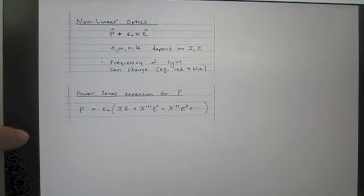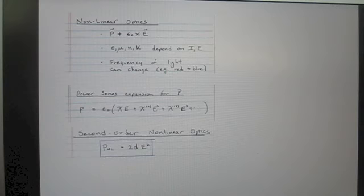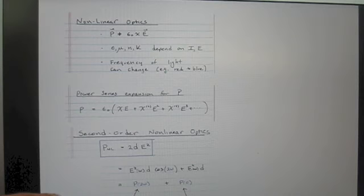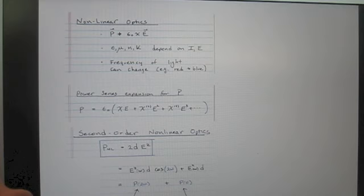The first nonlinear term is the second-order term, which gives rise to a polarization proportional to the electric field squared. This is the basis of second harmonic generation. If the electric field oscillates at frequency omega, the polarization will have a component at twice that frequency, and that oscillating polarization will be a source of radiation.